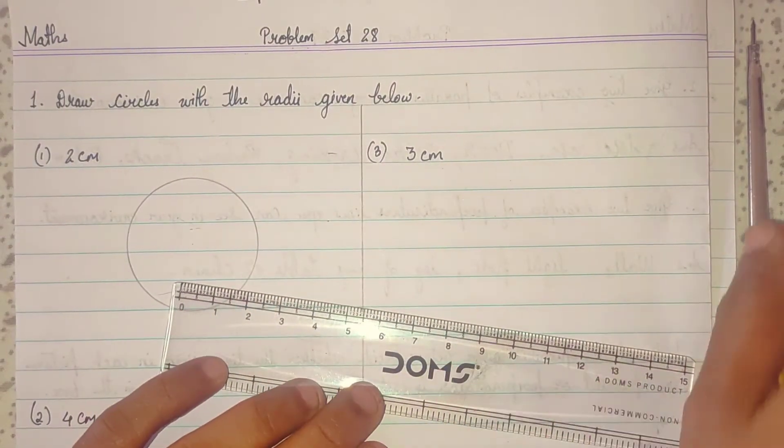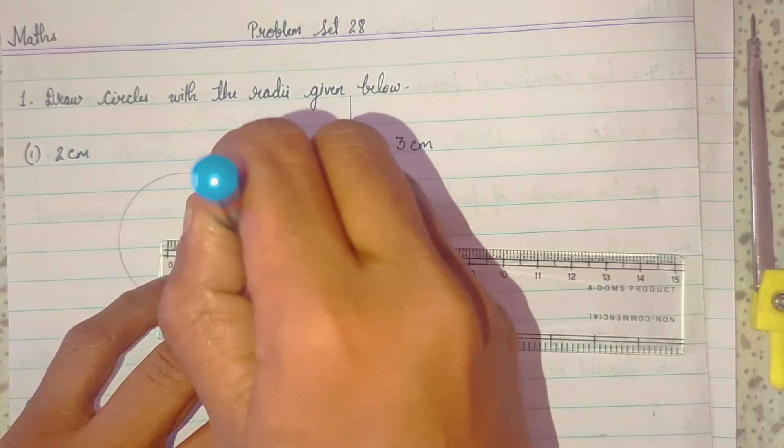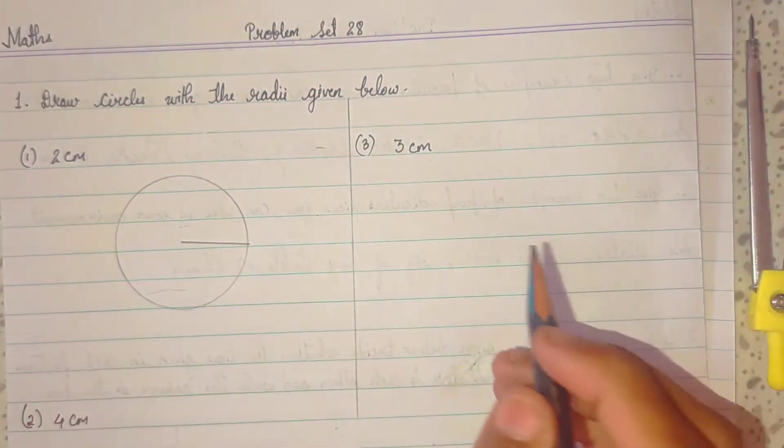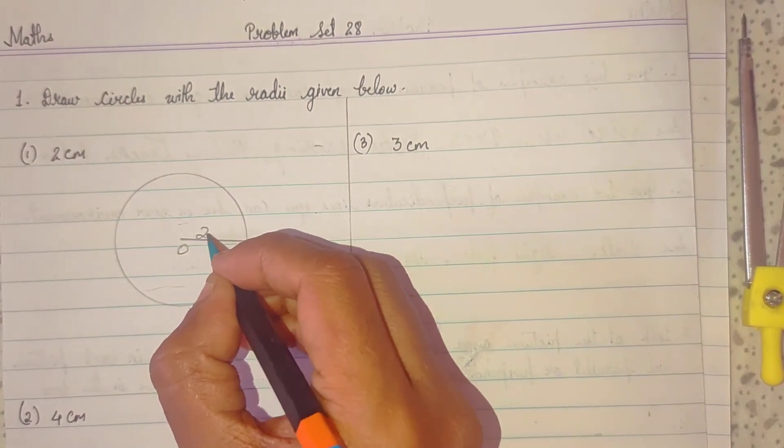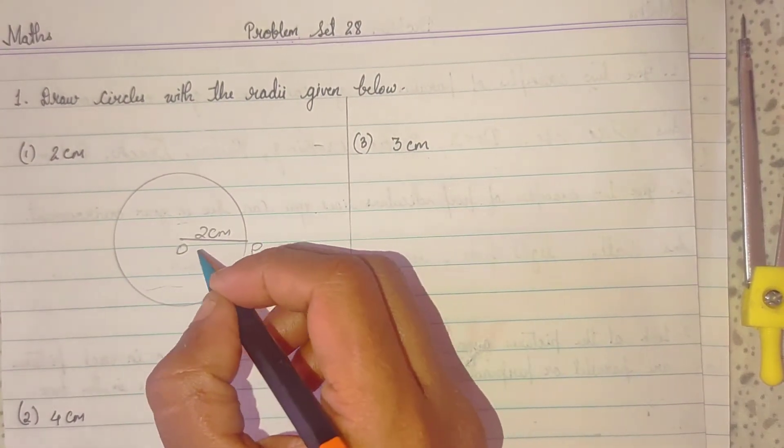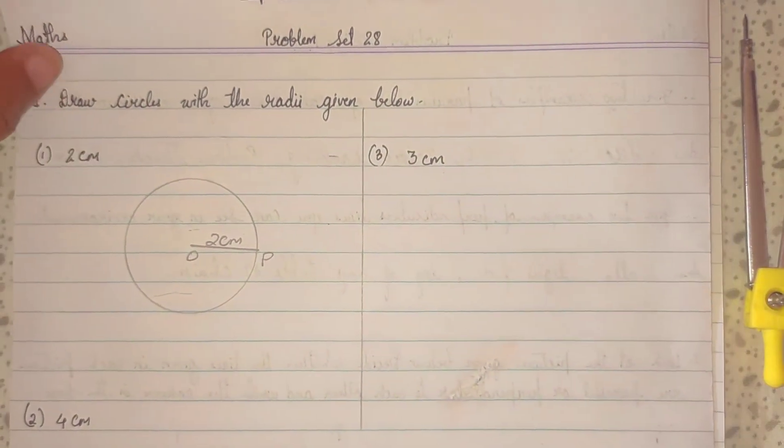And then, what you have to do? Draw radius and give it name, OP, 2 centimeter. You can give any name of your choice.